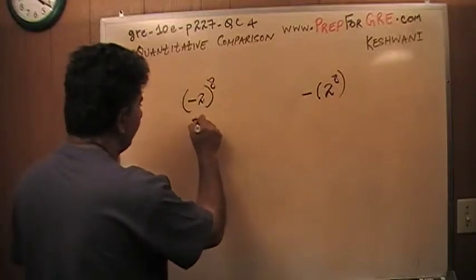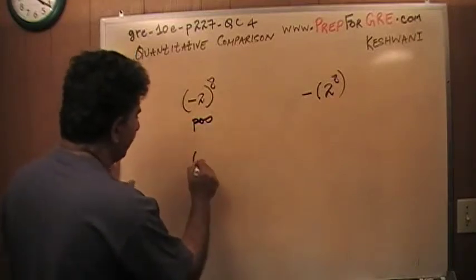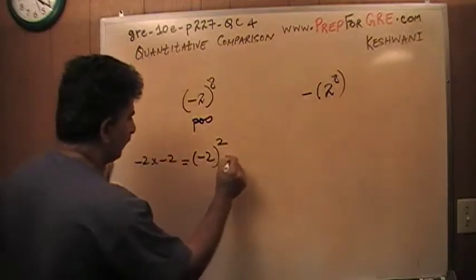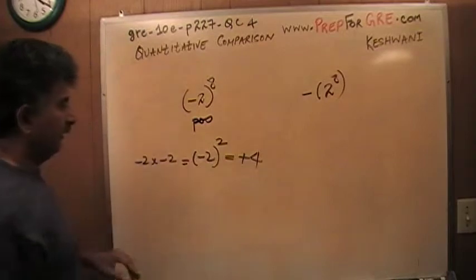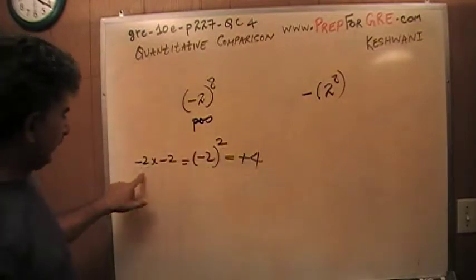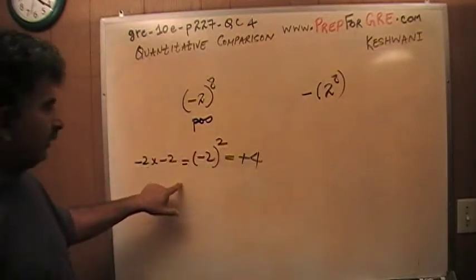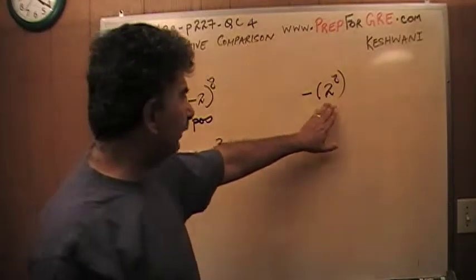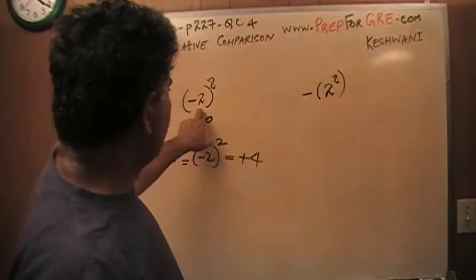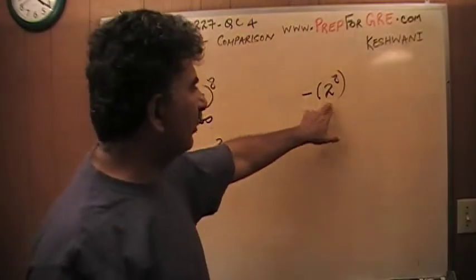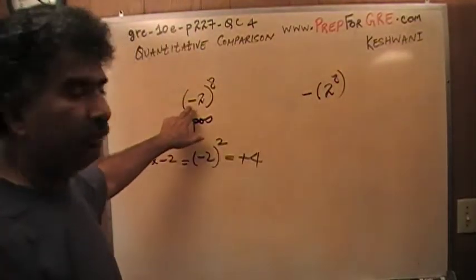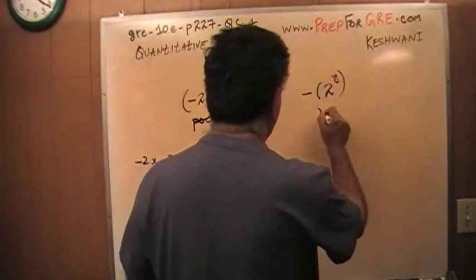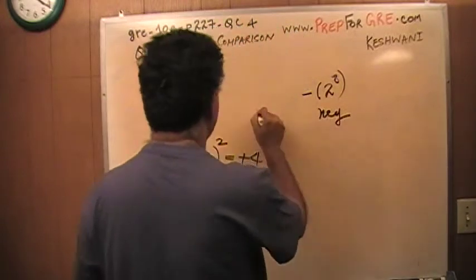Negative 2 raised to 2 is negative 2 times negative 2, which is positive 4. Raised to 4, it is still positive — positive 16. The quantities themselves are the same value of 2 raised to 8, except that with the parenthesis the whole quantity becomes positive, while without the parenthesis the negative sign means the result is negative. Therefore, the answer is A.